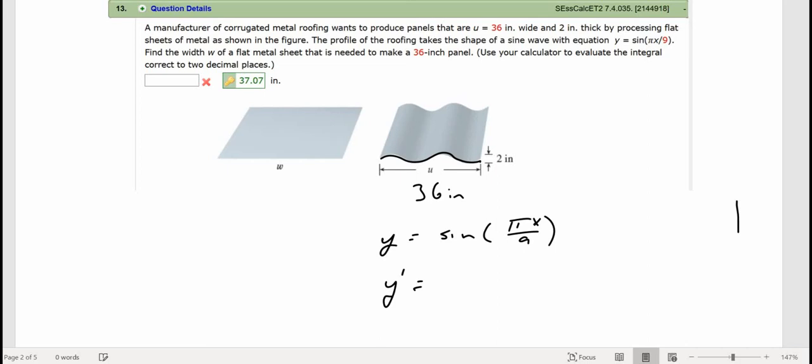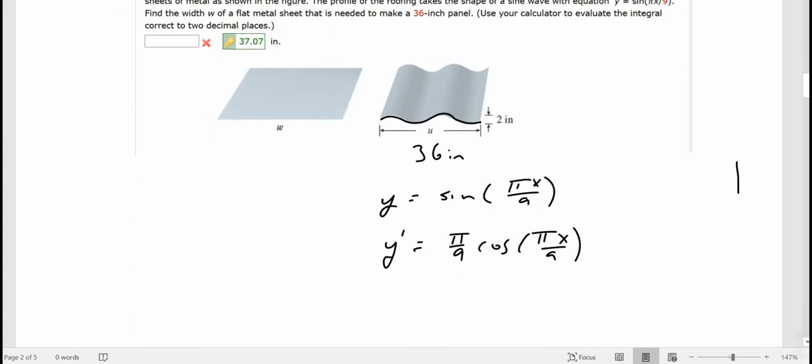So y prime is pi over 9 times cosine of pi x over 9, okay, using my little chain rule stuff.